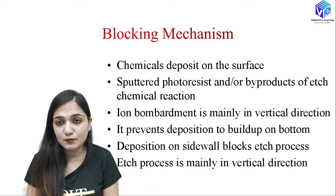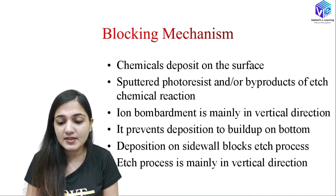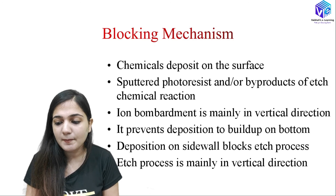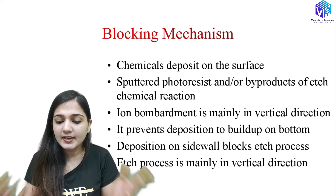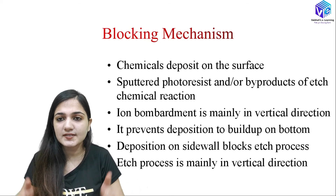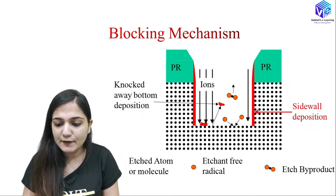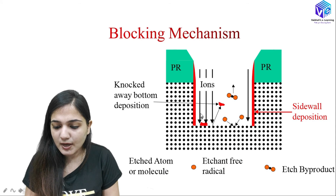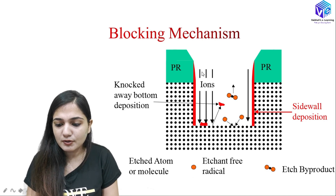Now coming to the blocking mechanism. Here we are not using heavy ions — we are using lighter ions. Chemicals deposit on the surface, including photoresist that is sputtered or byproducts of the etch chemical reaction. Ion bombardment, which is in the vertical direction, prevents deposition from building up on the bottom, so deposition occurs on the side wall only. The etch process is mainly in the vertical direction while deposition builds up on the side walls. The knocked-away bottom deposition is removed, and the etchant reacts with atoms while ions increase the speed.